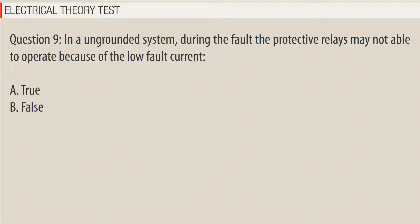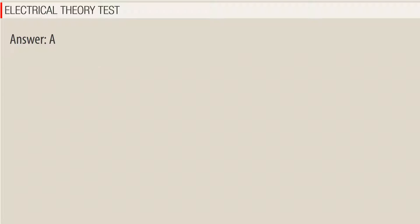Question 9: In an ungrounded system, during the fault the protective relays may not be able to operate because of the low fault current. A. True, B. False. Answer: A.